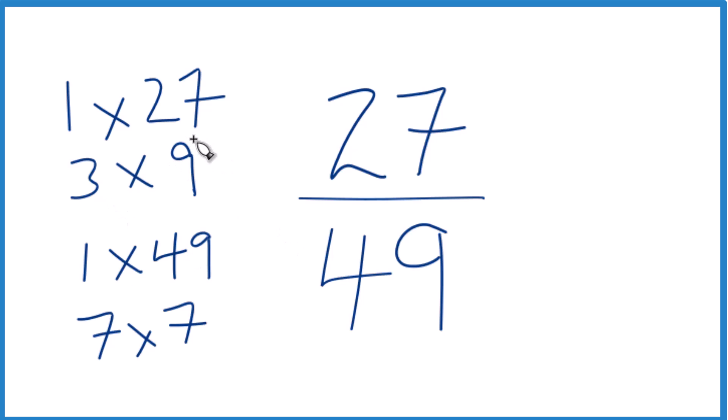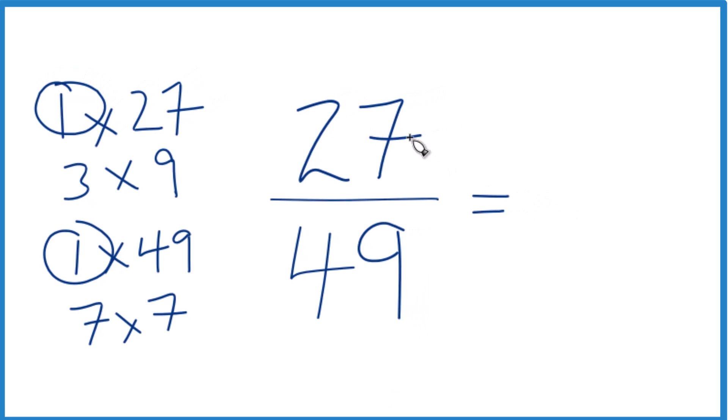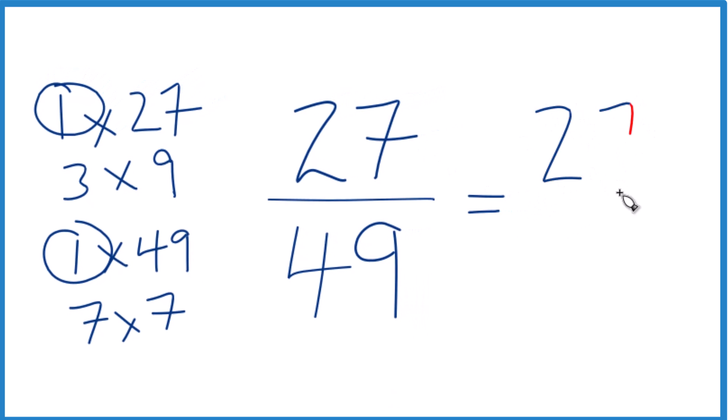So when we look at this, the only factor that's in common is 1. That goes evenly into 27 and 49. And if you divide 27 by 1, you get 27. If you divide 49 by 1, you get 49, and we're right back where we started.